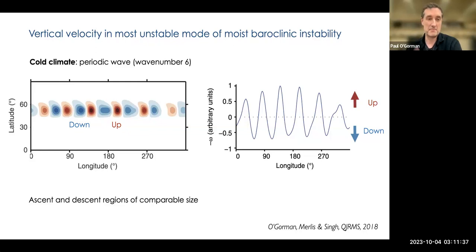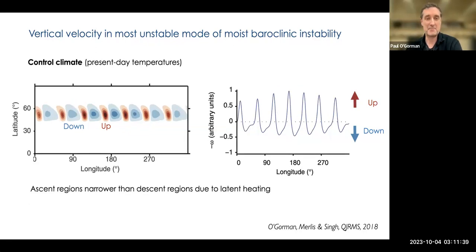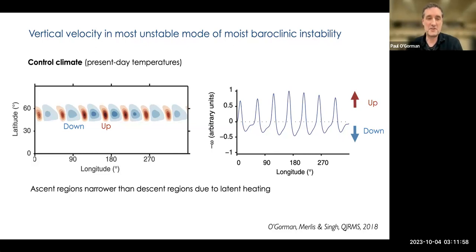Now going to present-day climate temperatures, you do see some differences between up and down. The upward areas are much narrower and stronger — overall mass must be conserved, so as much air goes up as goes down, but we have a narrowing of the upward-moving air. In terms of the most unstable mode, this is equivalent to what we see in present-day climate, and you can go further in various ways including more nonlinearity, but this is similar to present-day climate.